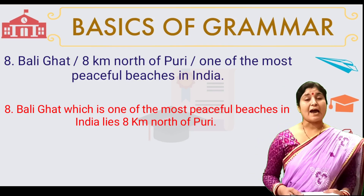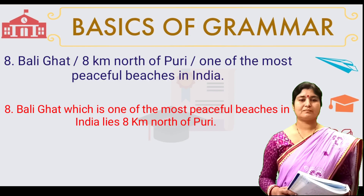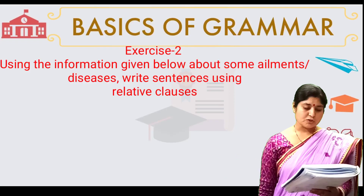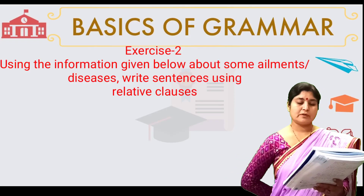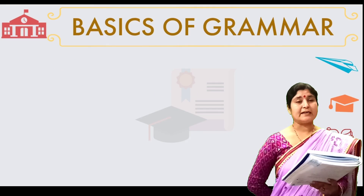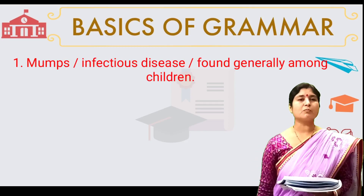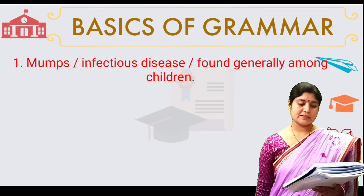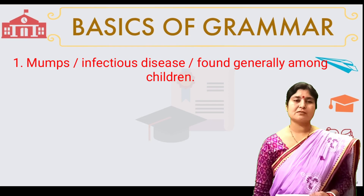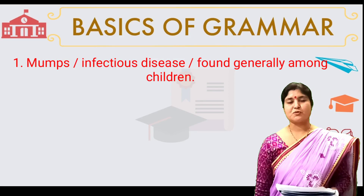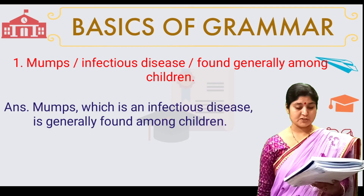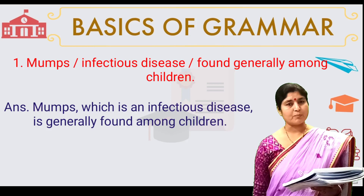Let us discuss another exercise from your book. Using the information given below about some ailments, write sentences using a relative clause. I need the answers from my dear students in the comment section. Question one: Mumps, an infectious disease found generally among children. Answer: Mumps, which is an infectious disease, is generally found among children.